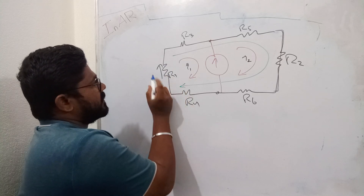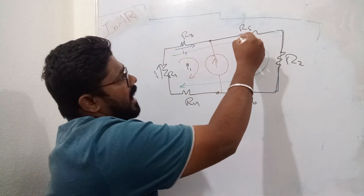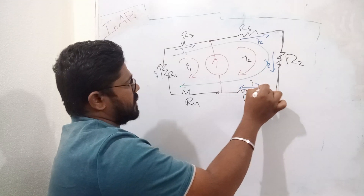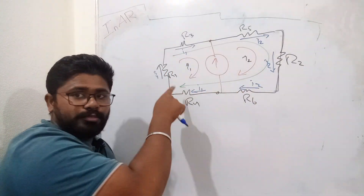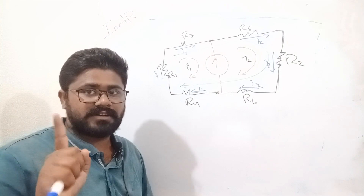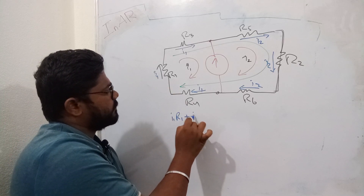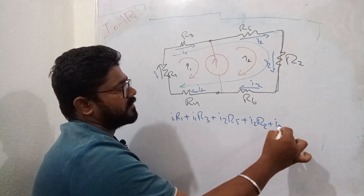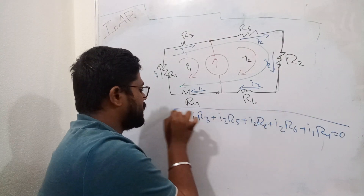The current flowing through R1 is I1. R3 alone carries current I1, and R5 alone carries current I2. R2 alone carries current I2, R6 alone carries current I2, and R4 alone carries current I1. We apply Kirchhoff's voltage law around this loop. The overall super-mesh equation is: I1·R1 + I1·R3 + I2·R5 + I2·R2 + I2·R6 + I1·R4 = 0.